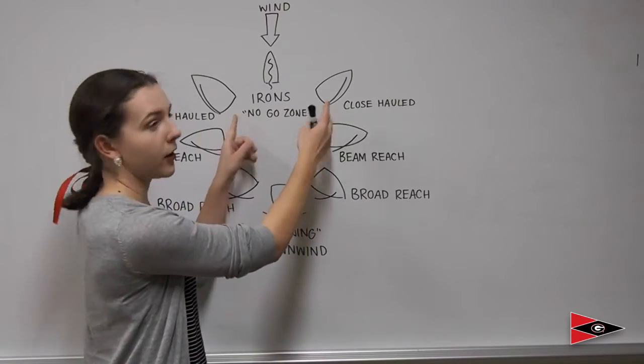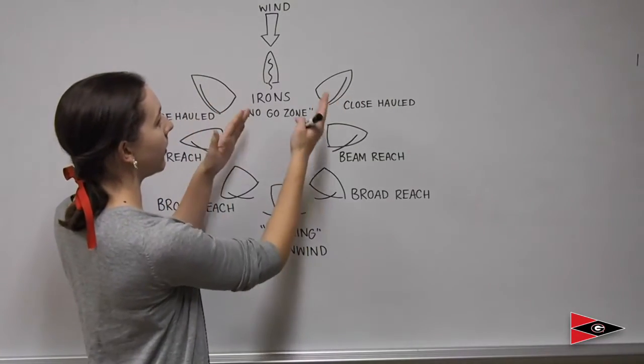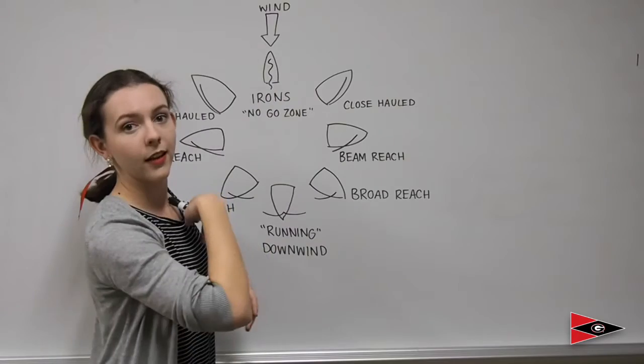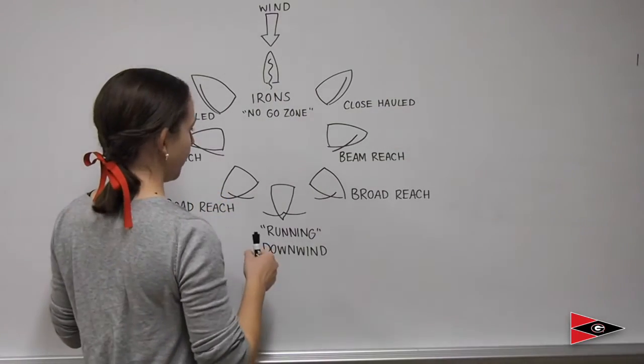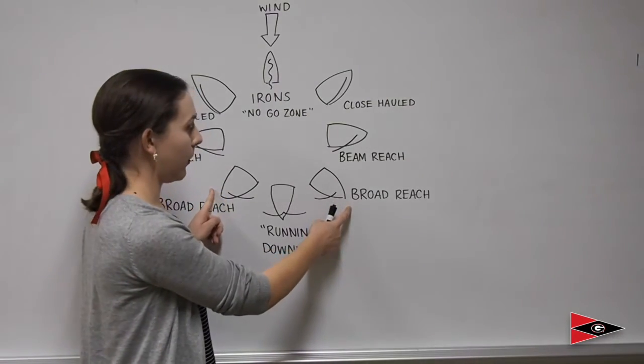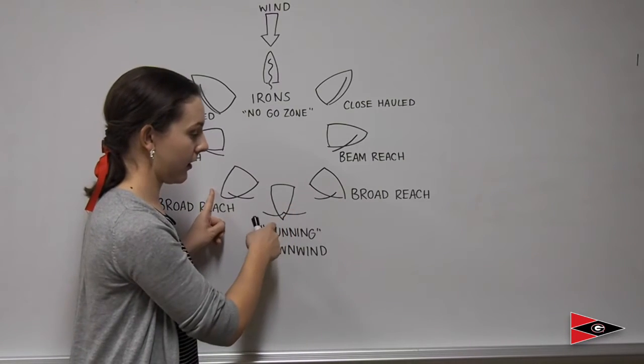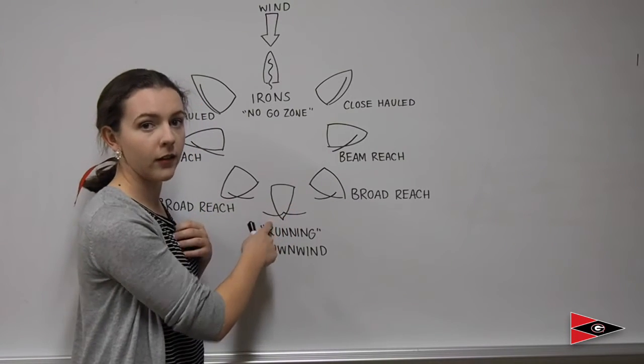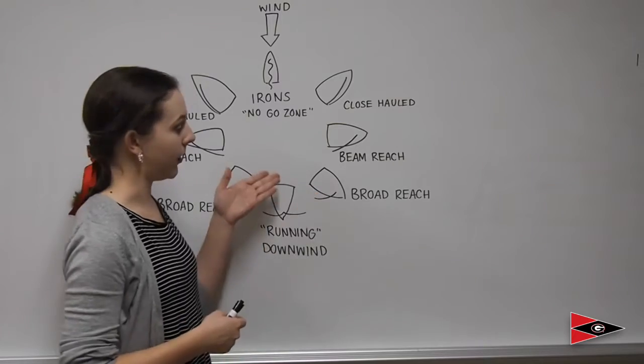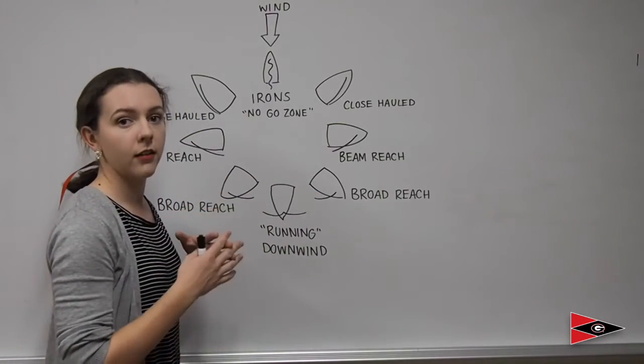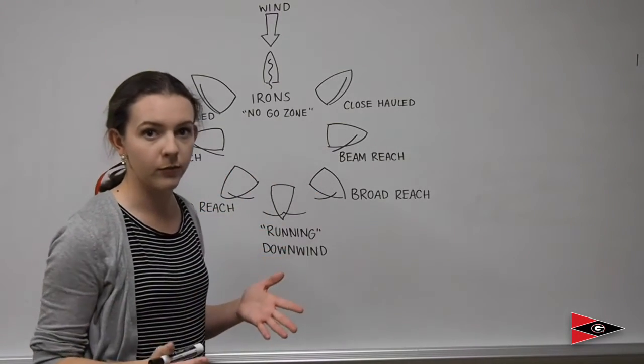Close-hauled will be used going between each of them to get up the water. Your broad reaches are going to be used when you're going from side to side going downwind. You can peel off on this tack or peel off on this tack over here for strategic purposes.